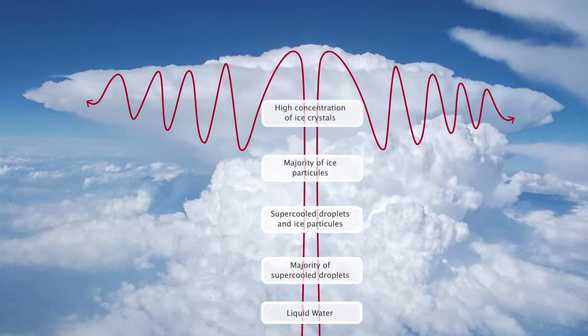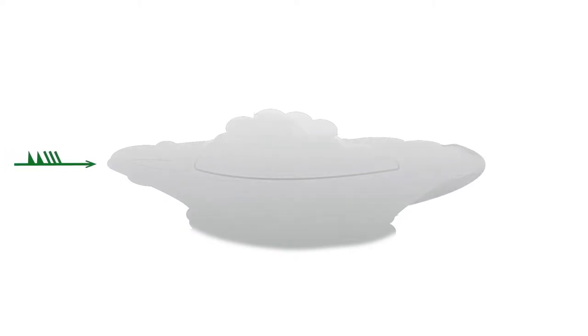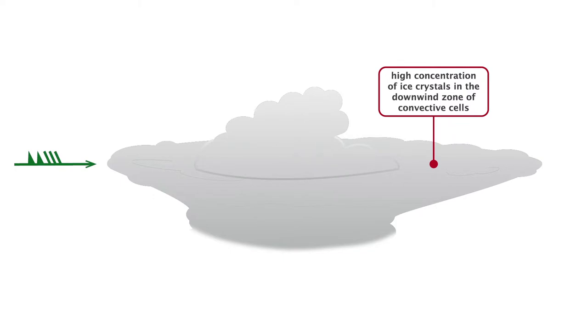If the wind velocity is negligible around the tropopause, the anvil will spread in all directions around the cell. If the wind velocity is significant — for example due to a jet stream — the anvil will develop downwind of the convective cell. The density of ice crystals will be much higher, and this area should be particularly avoided.